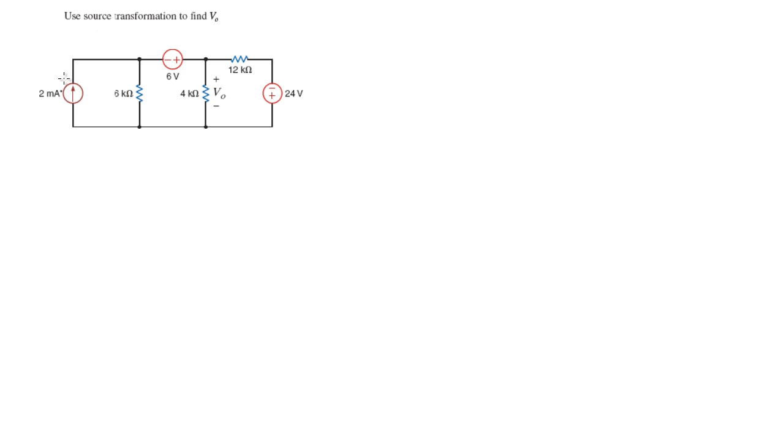Now, when you change it into a voltage source, the parallel resistor gets moved into series with the voltage source, and it can be on either side.